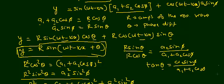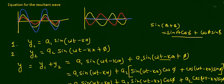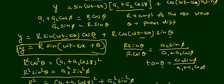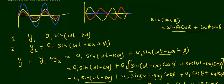To summarize: we have two waves with equations y₁ = a₁ sin(ωt − kx) and y₂ = a₂ sin(ωt − kx + φ). Adding these two waves gives the resultant wave y = r sin(ωt − kx + θ), where r² = a₁² + 2a₁a₂ cos φ + a₂², and tan θ = a₂ sin φ / (a₁ + a₂ cos φ).